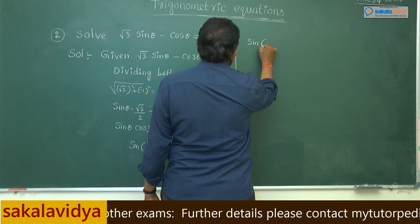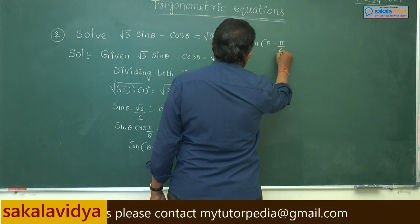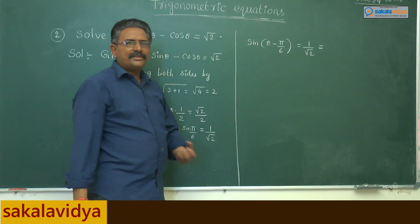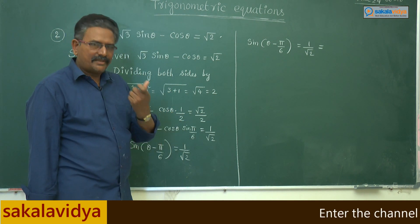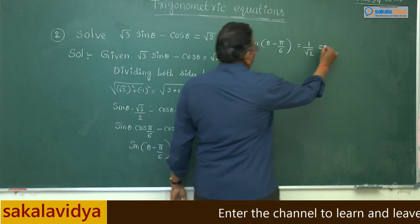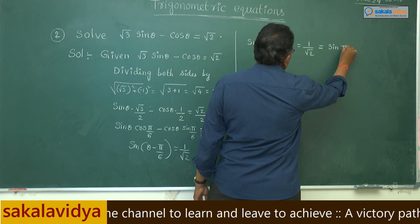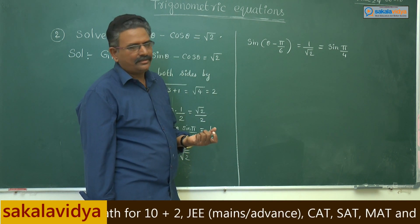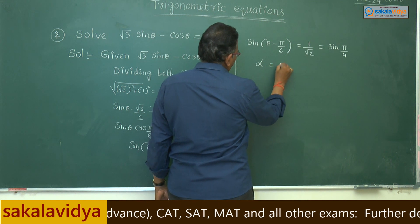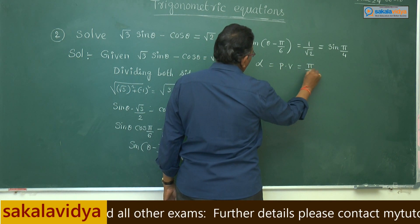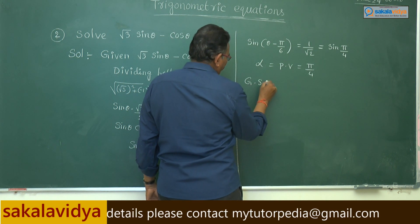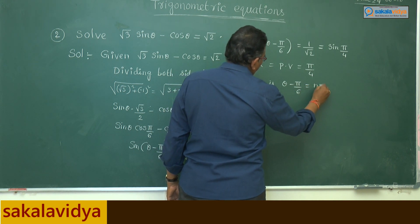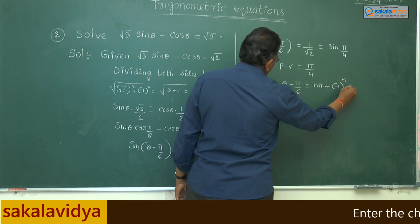Now let us solve sin(θ - π/6) = 1/√2. Here 1/√2 is equivalent to sin 45°, so that means we can write sin(π/4). Easily we can find out the principal value of this equation. The principal solution here is α = π/4. The general solution is: θ - π/6 = nπ ± (-1)ⁿ α.